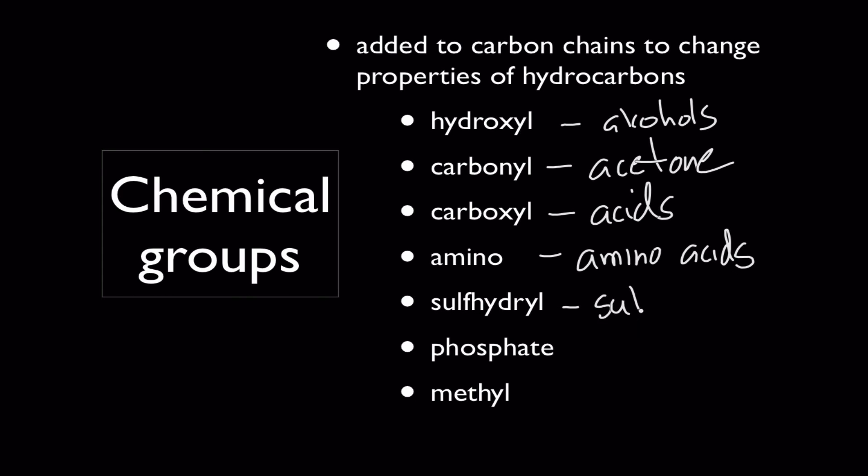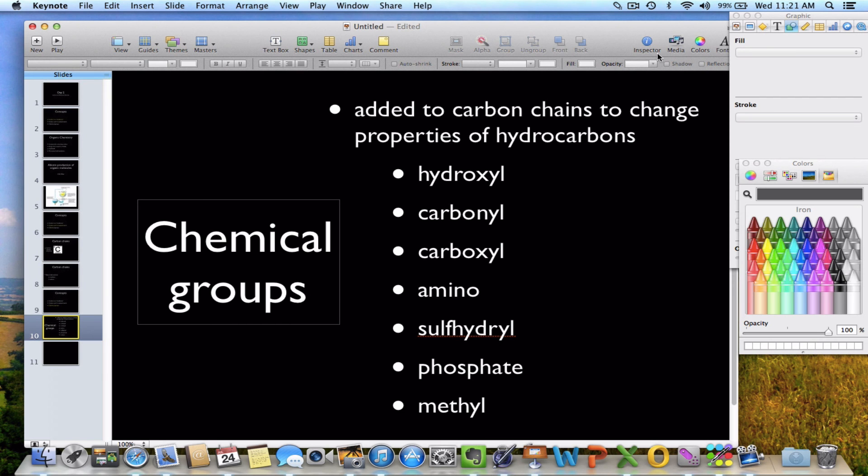Sulfhydryl groups, they have a sulfur in them. Phosphate groups, phosphorylation. And finally methyl groups, when you add them you methylate things, so we call that methylation. So a basic understanding of this chemistry is going to help you a lot in when we talk about photosynthesis and respiration and all those things later on in AP biology. Thank you and that ends our slideshow.